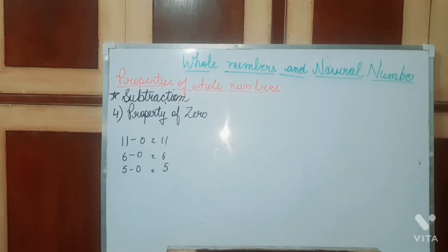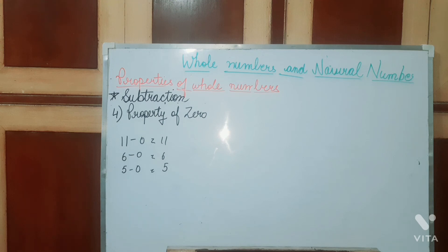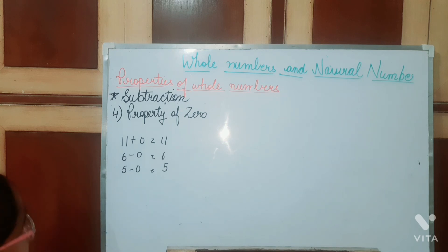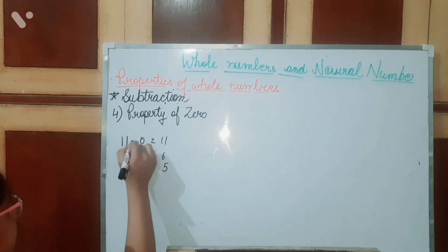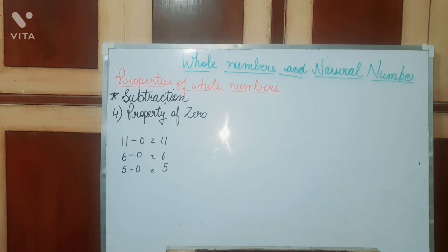Our next property is the property of zero. In this property, if we subtract 0 from any whole number, the result remains the number itself. This is similar to the identity element — subtracting 0 from any whole number gives back the number itself. So we have completed all the subtraction properties for whole numbers.